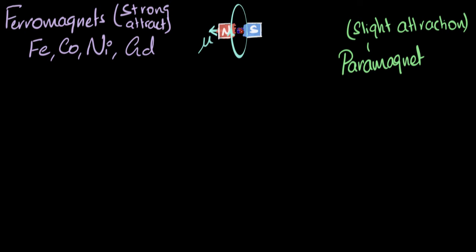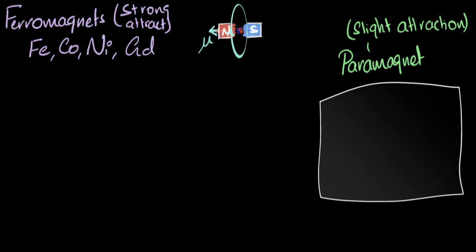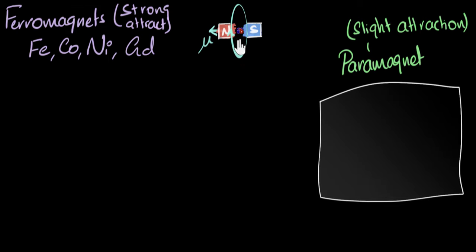All right, so let's first look at a paramagnet. Say we could look into a piece of aluminum. Aluminum is a paramagnet. It contains atoms that have magnetic moments that behave like tiny magnets. So the first question I have is, why doesn't a piece of aluminum itself behave like a magnet?